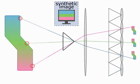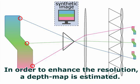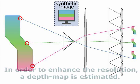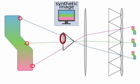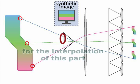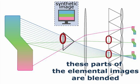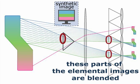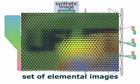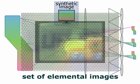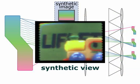In order to enhance the resolution, we use a depth map which is estimated for each virtual viewpoint. For the interpolation of missing parts, these parts of the elemental images are blended. From this set of elemental images, we obtain the synthetic view.